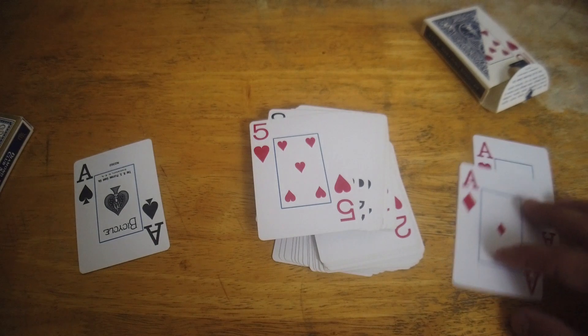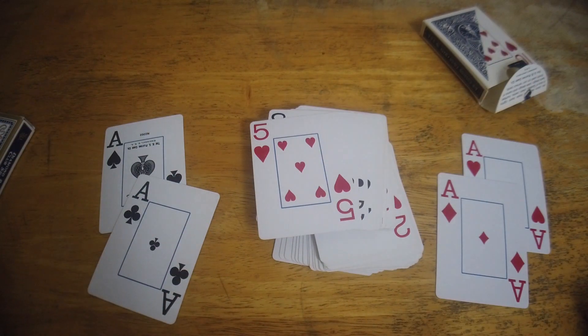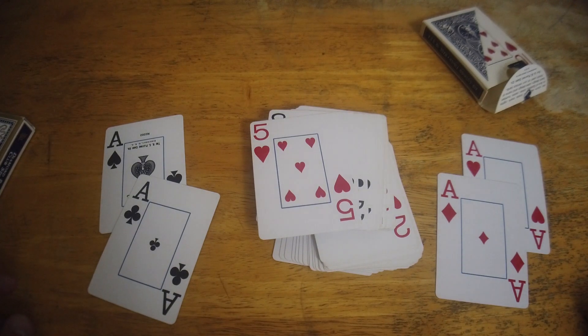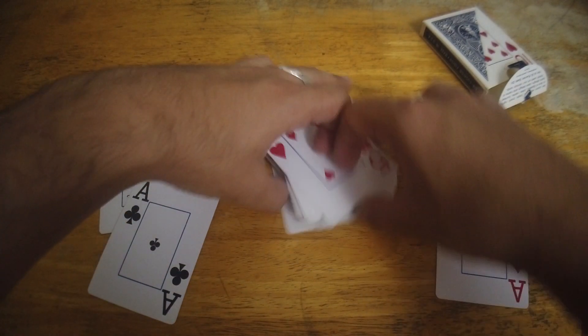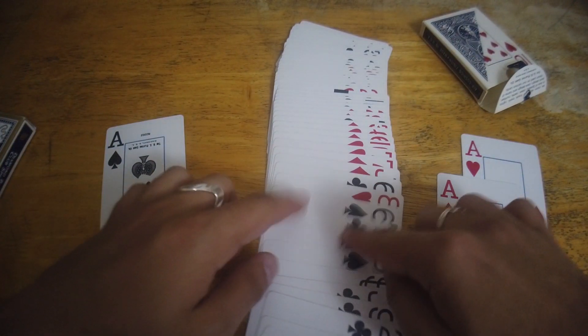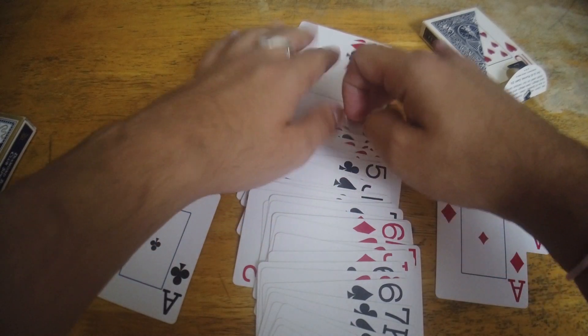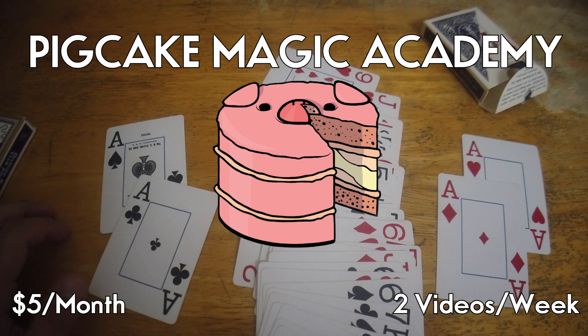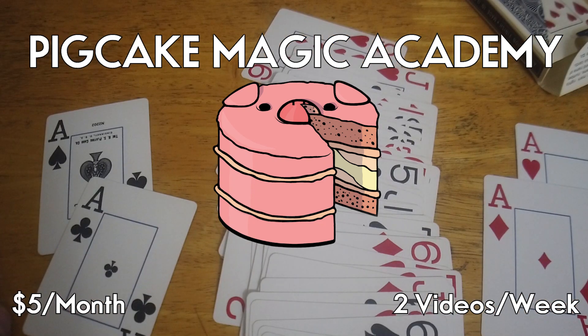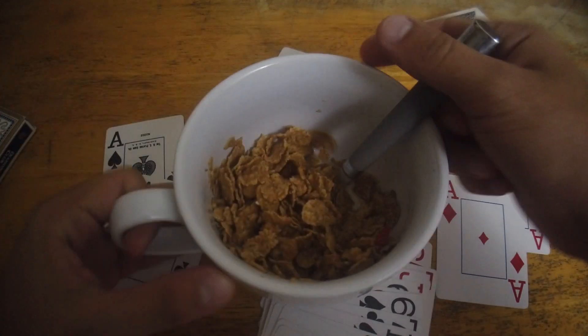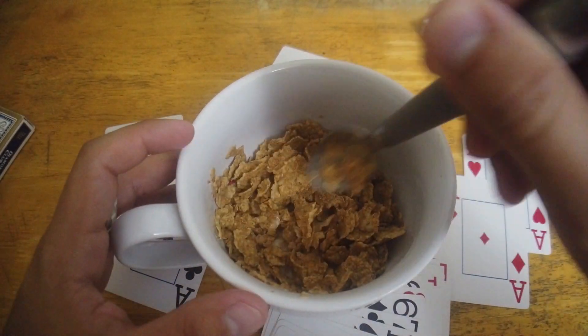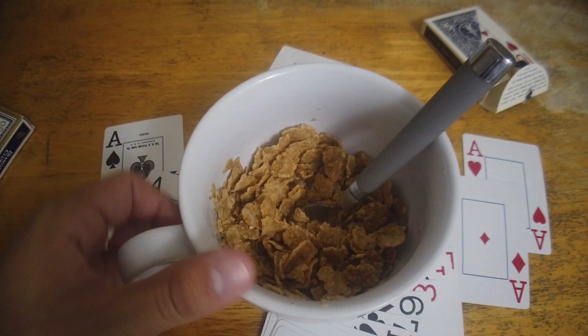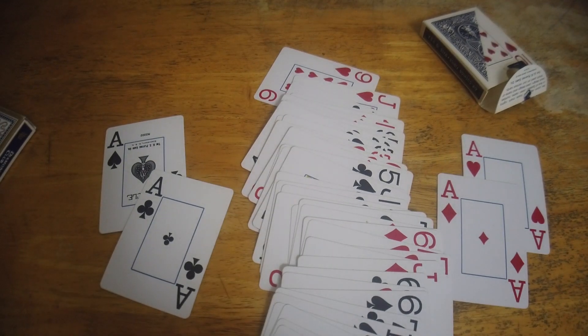Now of course, what would that do? What good would that do if I could only find the four aces from a deck of cards that's been mixed face up into face down? That wouldn't do anything at all. But you see also, I fixed the deck. The deck is all facing the same direction. You see that? They're all face up because I did that with my skill that I learned on the Pig Cake Magic Academy. So usually this would be the time when I shill the Pig Cake Magic Academy. Although I kind of did it in the patter of the trick.